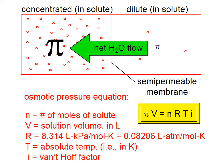This equation is very similar to the ideal gas law. You might remember the ideal gas law is PV equals nRT. That's essentially what we have here, except instead of a P, we have a π, πV equals nRT, and then we have that van't Hoff factor at the end.